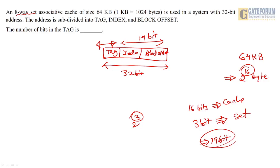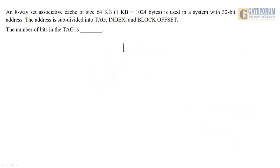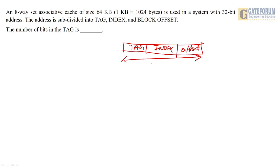For an 8-way set-associative cache: 8 = 2^3, so 3 bits are used to identify the way within a set. We use 16 bits to represent the cache and 3 bits for set indexing, totaling 19 bits reserved. The remaining bits for the tag are 32 − 19 = 13 bits. However, let me re-examine using the formula.